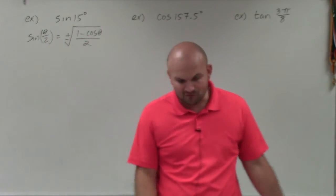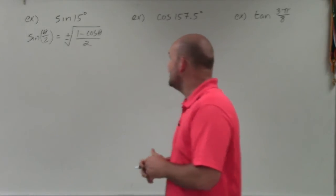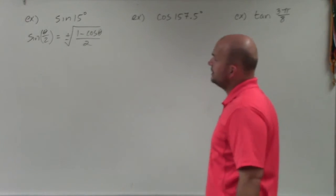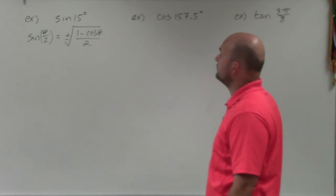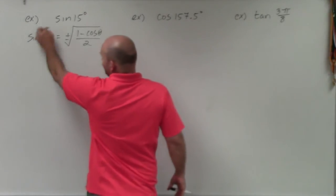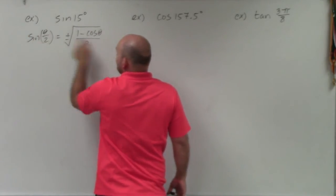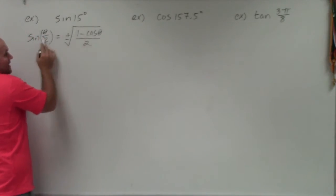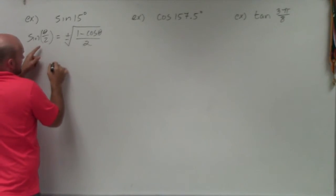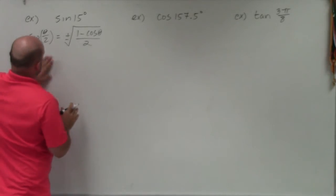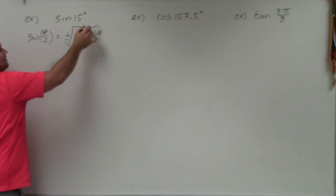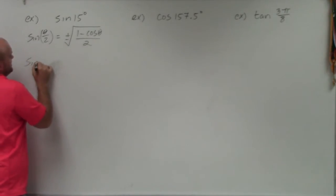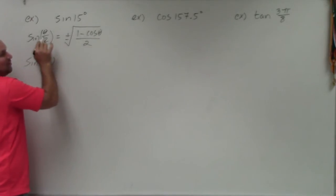I did write the formulas down — you're going to want to make sure you have them right in front of you. So: sine of theta divided by 2 equals plus or minus the square root of 1 minus cosine of theta, all divided by 2. This means the angle is being divided by 2, so to find theta you multiply by 2. So for sine of 15 degrees, you can see that doubling 15 gives 30 — so theta is 30 degrees.